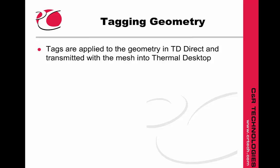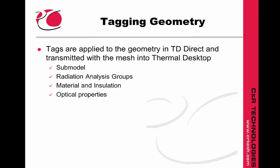In TD Direct, users apply tags that will assign properties to the mesh in Thermal Desktop. For example, users can set objects to specific submodels, define the radiation analysis groups, set the material and optical properties, and other properties. Every time a mesh is created from this geometry, it will include these properties, which means it is ready to go as soon as the mesh is generated.